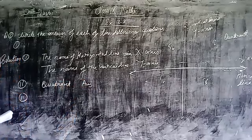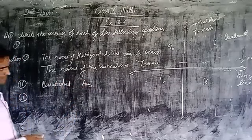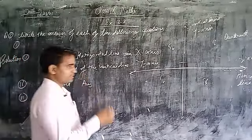Now question number three asks for the name of the point where these two lines intersect. The point where the horizontal line and the vertical line intersect is called the origin. So the answer to question one, part three, is the origin point.